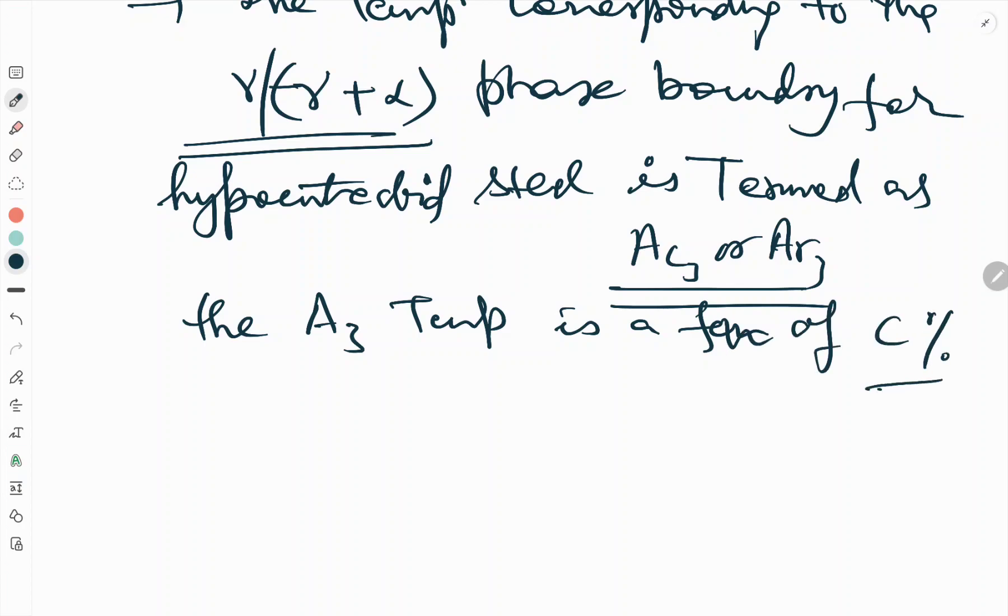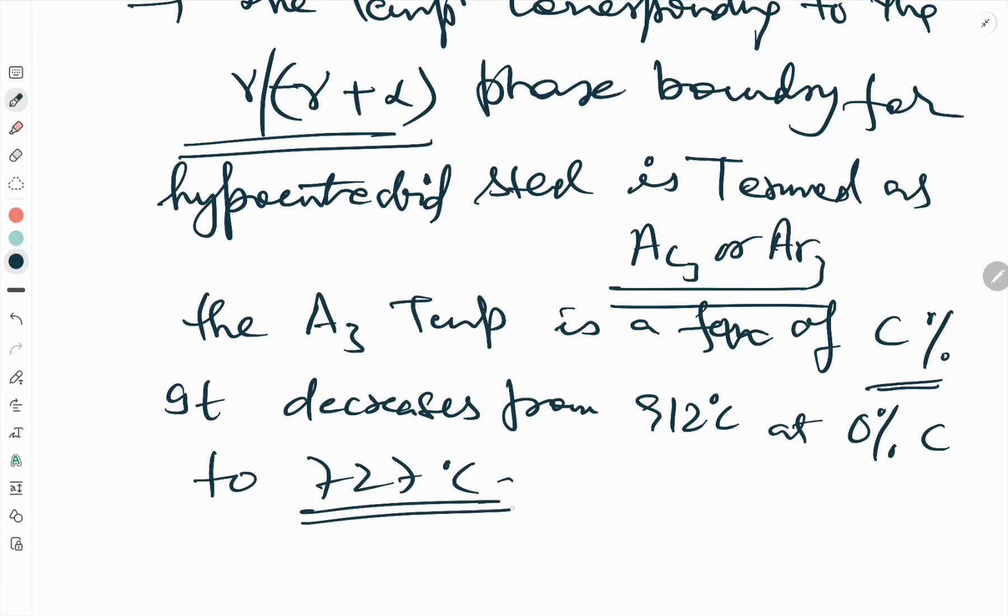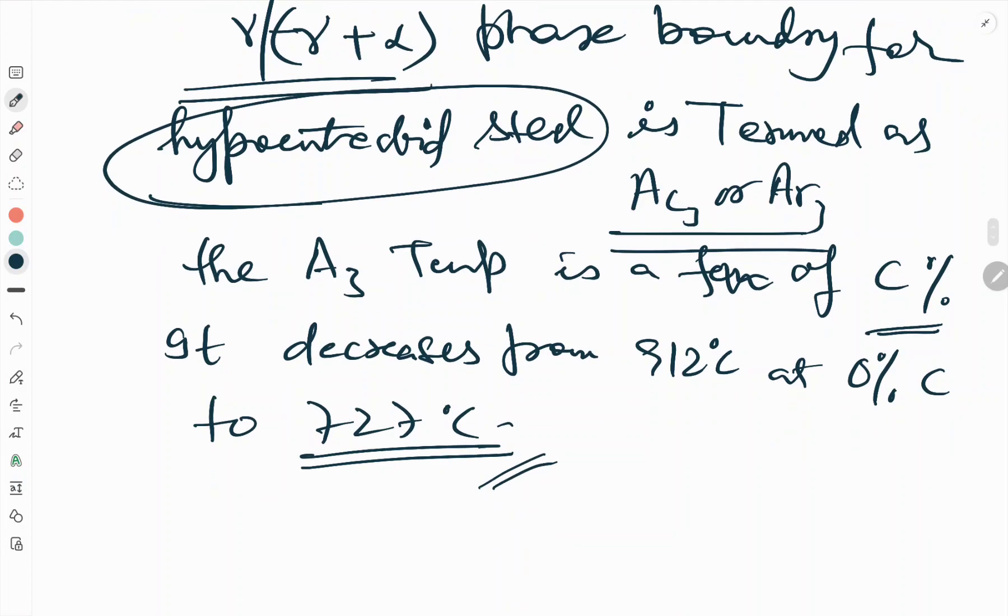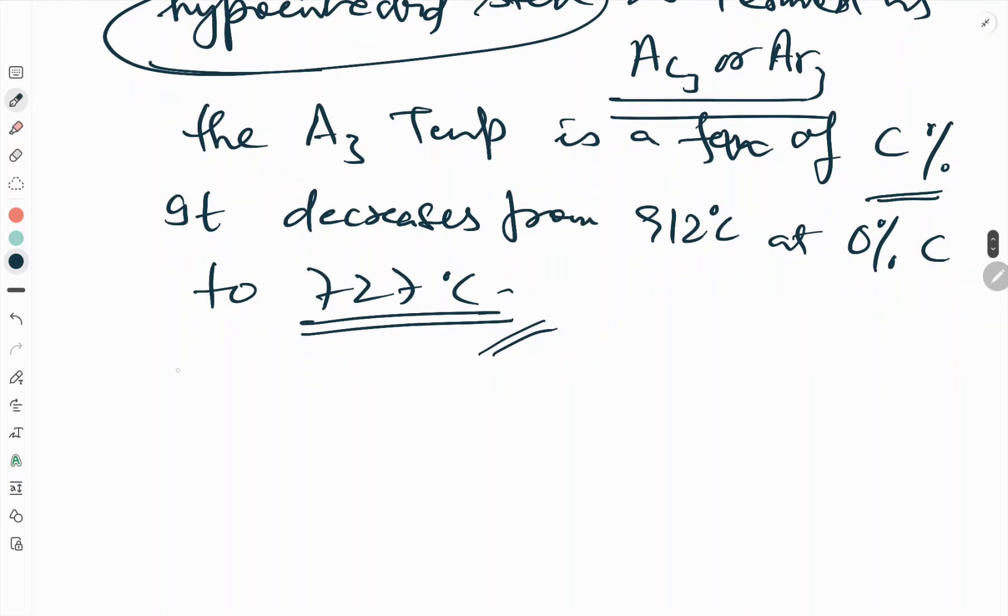Unlike A1, the A3 temperature is a function of carbon percentage. It decreases from 910 to 727 degree centigrade at zero percent of carbon. And this is a hypoeutectoid steel.